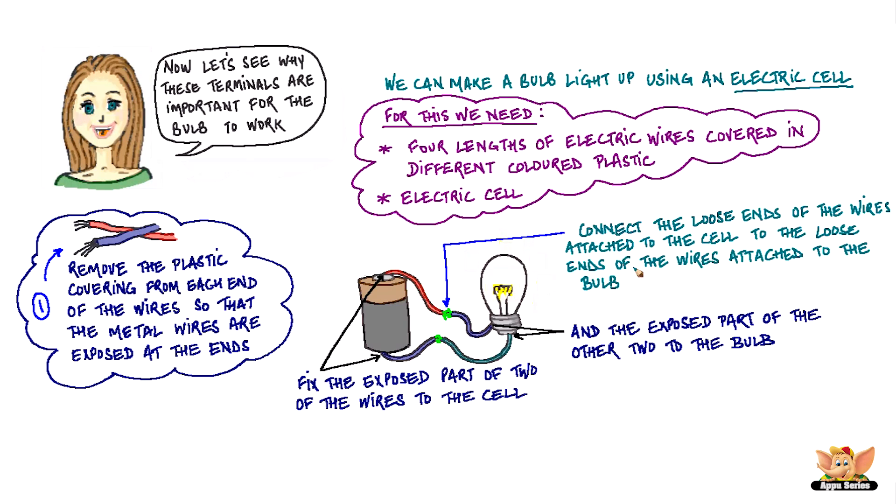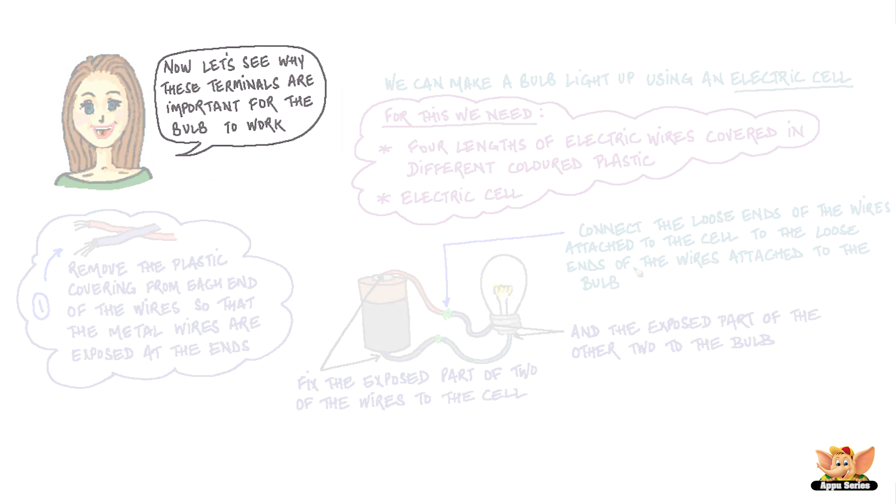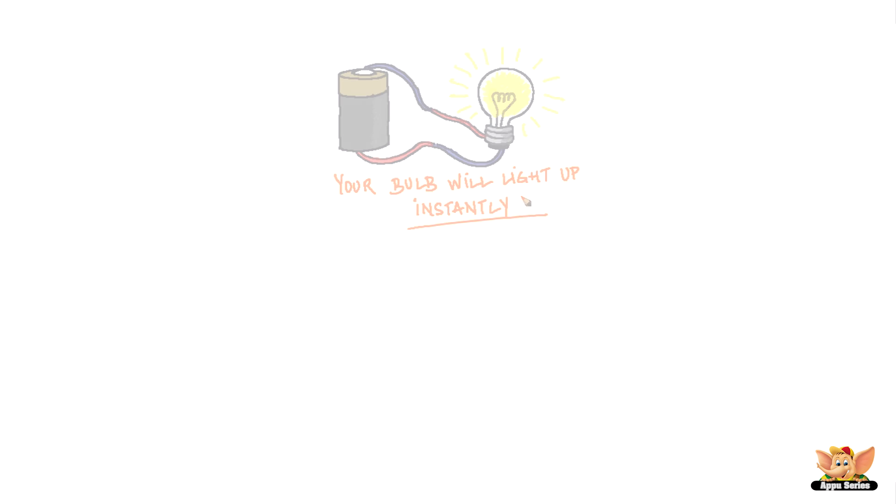Connect the loose ends of the wires attached to the cell to the loose ends of the wires attached to the bulb. Your bulb will light up instantly.